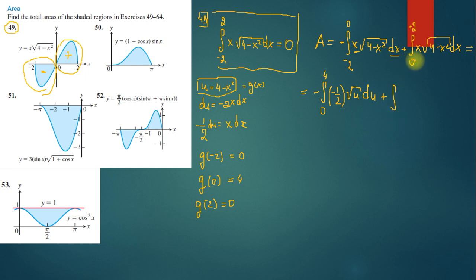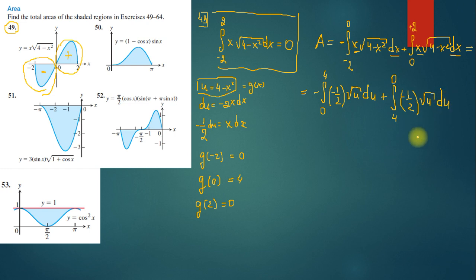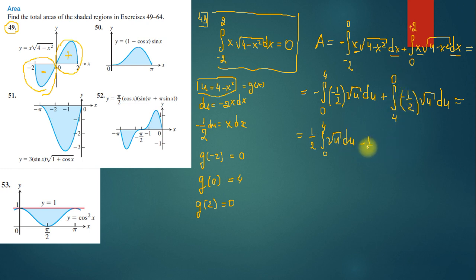For the second integral, the limits are from 4 to 0, with x dx = -1/2√u du. Taking out the coefficients, I get (1/2) integral from 0 to 4 of √u du, and the second part gives (-1/2) integral from 4 to 0 of √u du. Using the property of integrals, switching endpoints changes the sign.